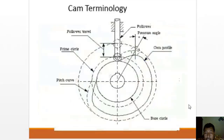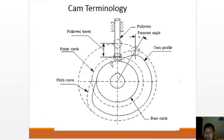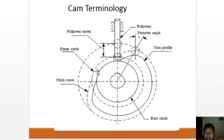Cam terminology: when using a roller follower, the roller center traces a path called the pitch curve. The distance from the cam center to the roller center at maximum position gives the maximum follower travel. The prime circle is defined at the center of the follower. The pitch curve is traced by the roller center, while the cam profile is the actual outer surface of the cam.